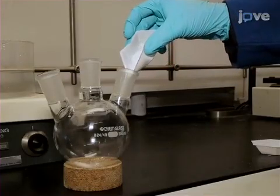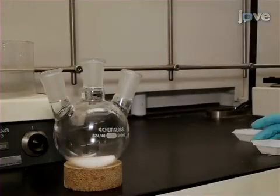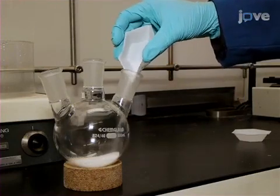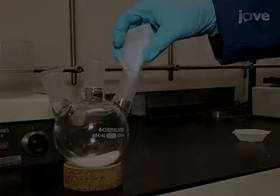Add 8.9 grams of D-alanine and 11.9 grams of potassium bromide to a 500 milliliter three-neck round-bottom flask with a magnetic stir bar.